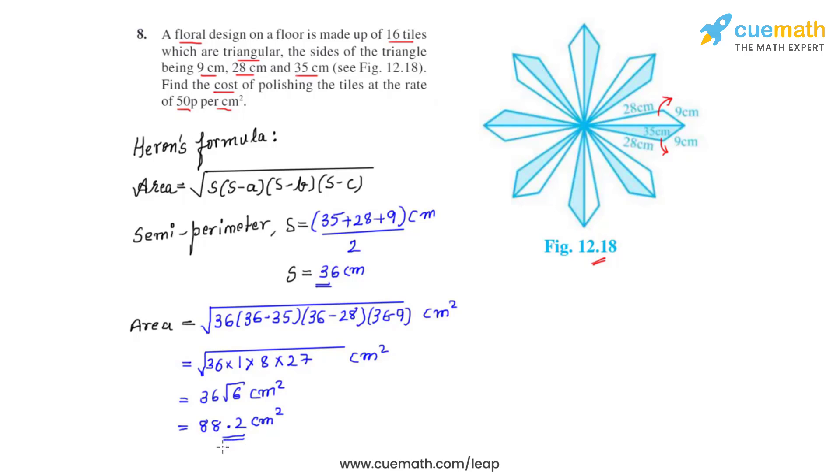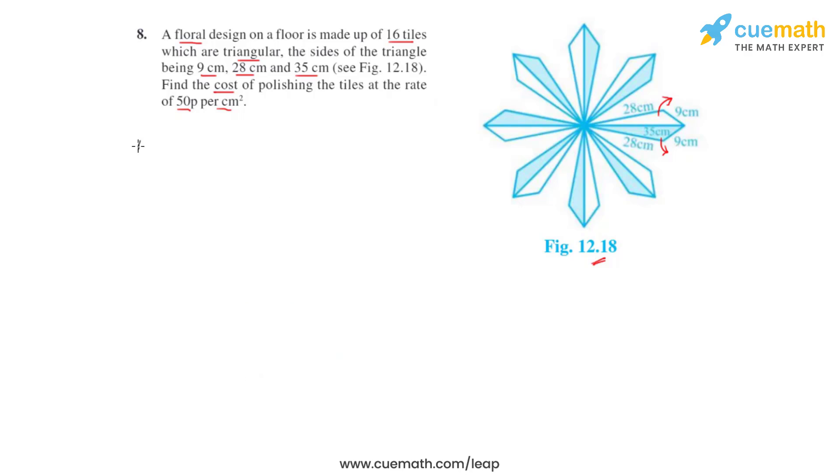Now that we have found out the area of one triangular tile, let's find the area of 16 such tiles. So we write: area of 16 tiles equals 16 times the area of one triangular tile, which is 88.2 centimeter square.